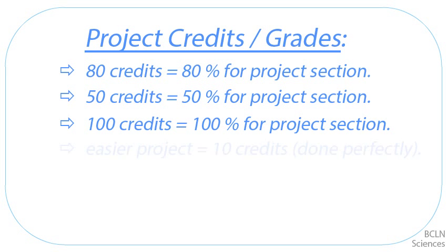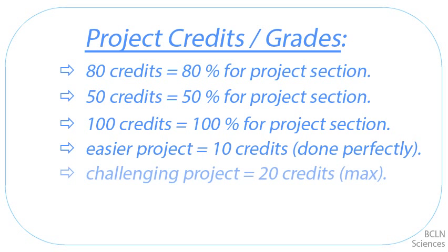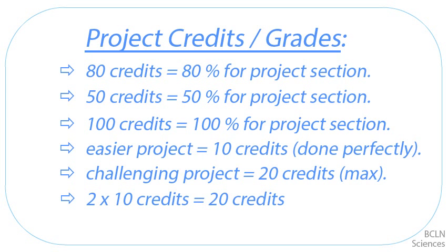This is based on the expected difficulty of the project. An easier project might be worth 10 credits, while a more challenging project might be worth 20 credits. Therefore, you can choose to try two easier projects or accomplish the same credits by taking on a more challenging project — two different approaches to the same outcome.